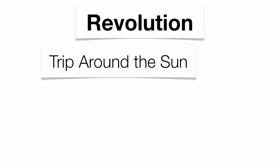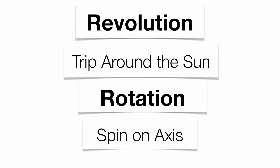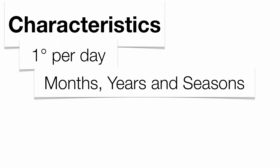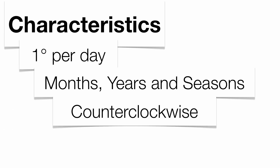Revolution is going to be an important factor here because it's going to be our trip around the sun. Don't get that mixed up with our spin on the axis called rotation, which gives us day and night. The characteristics of revolution include the idea that we revolve once every 365 days, or about a degree per day. It gives us the months, the years, and anything to do with our seasons, and we revolve around the sun in a counterclockwise direction.